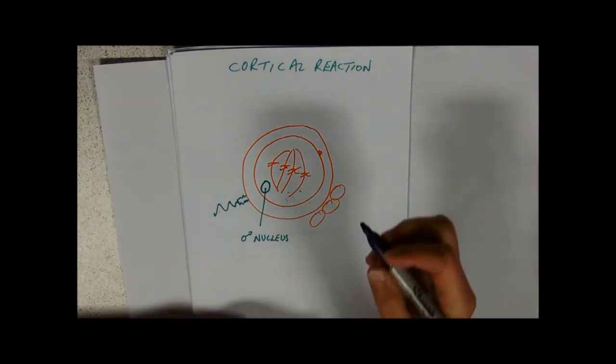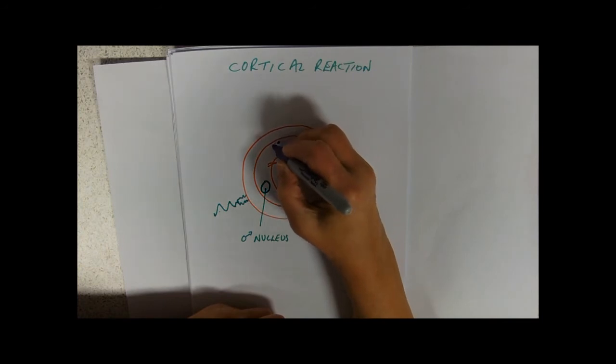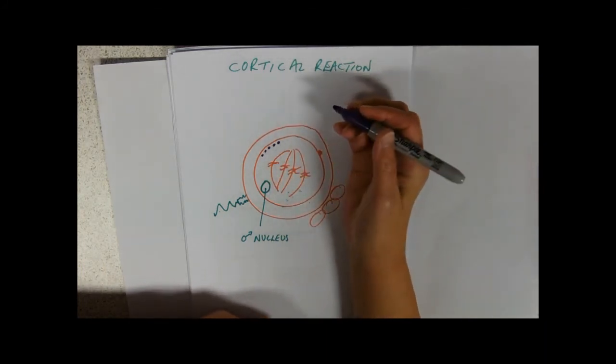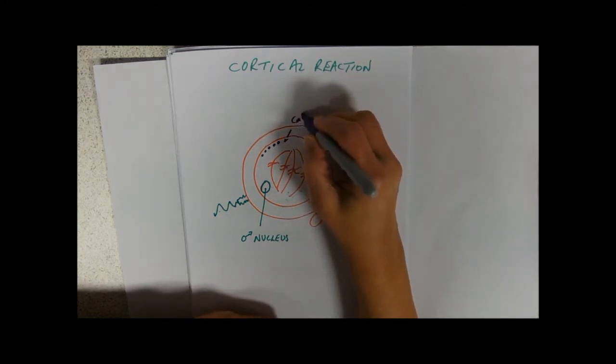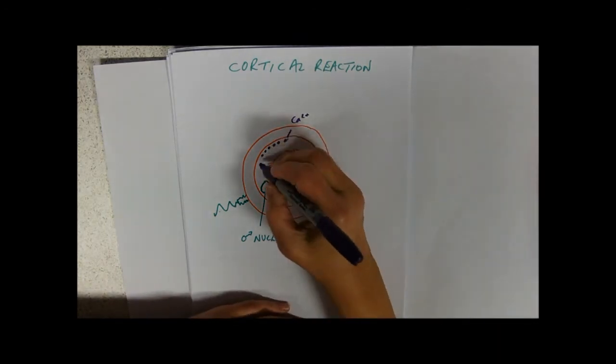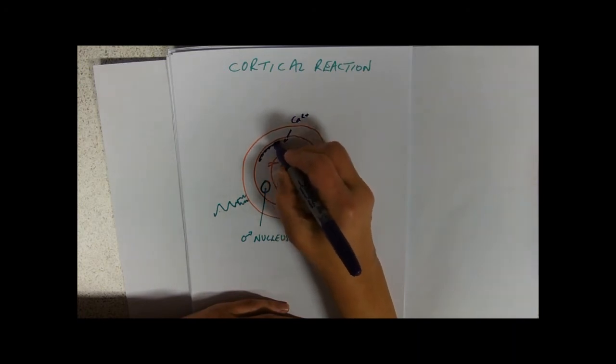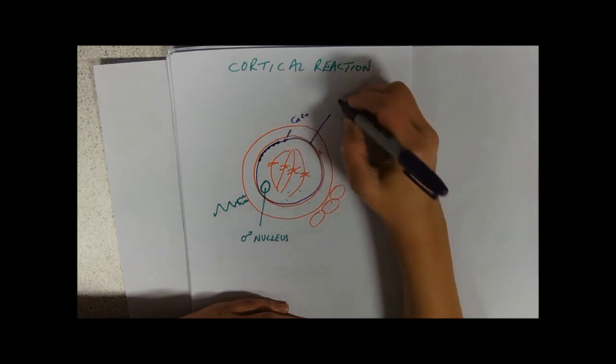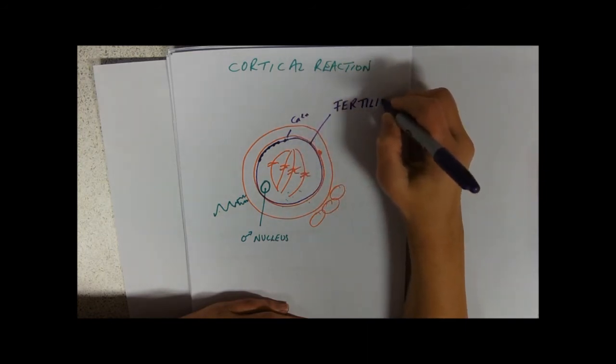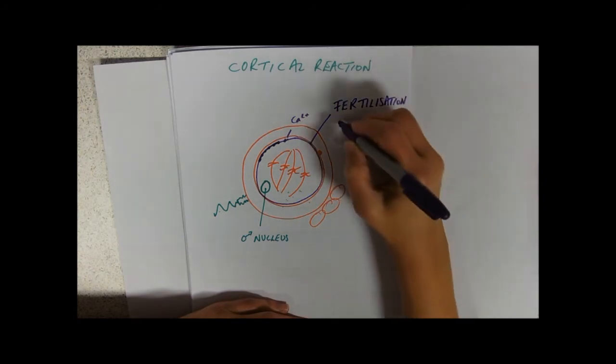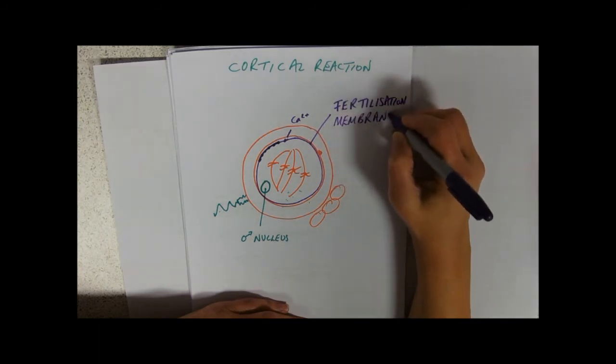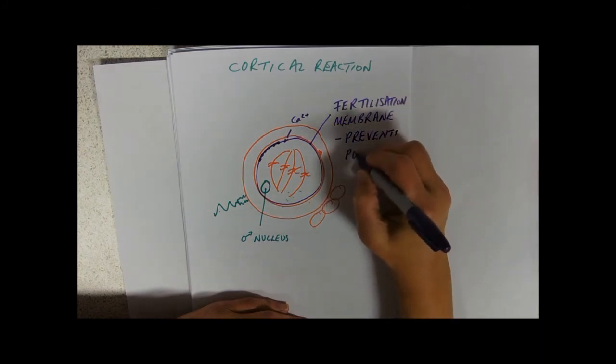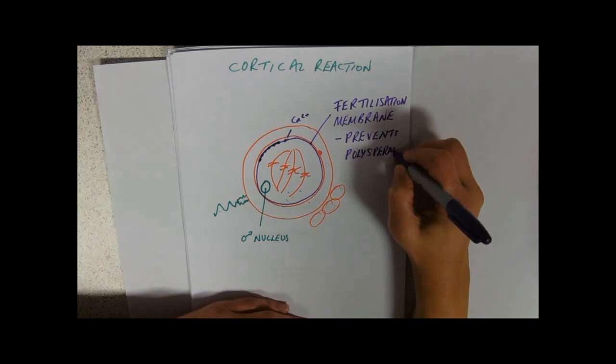And so what we have is what's called the cortical reaction. Just underneath the oocyte membrane there are a lot of little cortical granules, and the entrance of the male nucleus into the secondary oocyte stimulates calcium ions to flood into the cell. Calcium ions are involved with fusion, so they fuse all these cortical granules together all the way around the outside, just underneath the cell membrane, and make what's called a fertilization membrane. And it's to prevent entry of other sperm, so we say that it prevents polyspermy—many sperm getting in. It just sticks to the one.